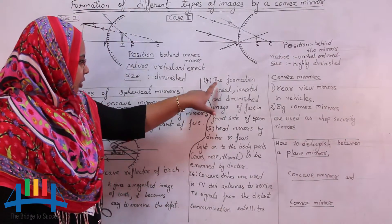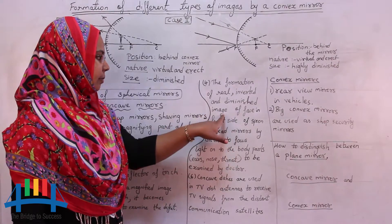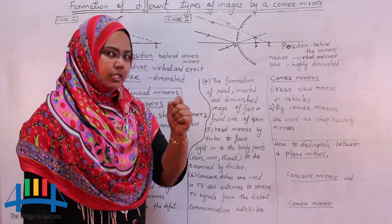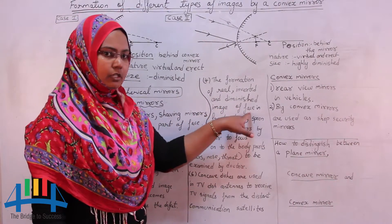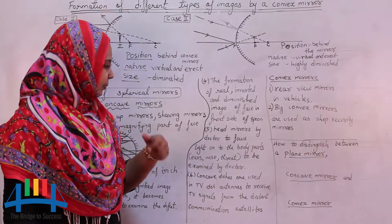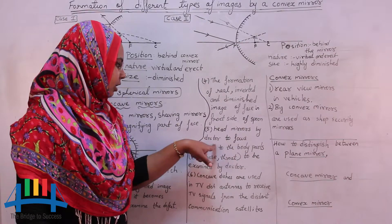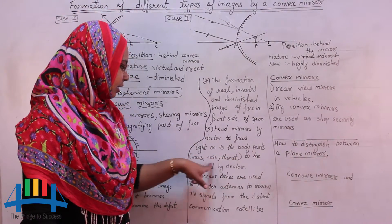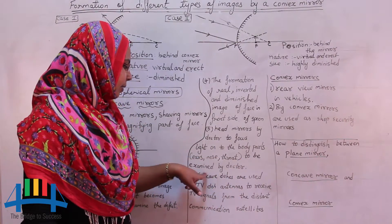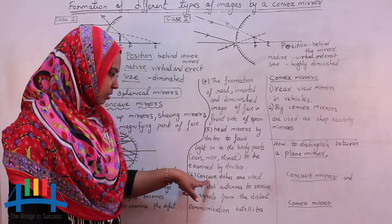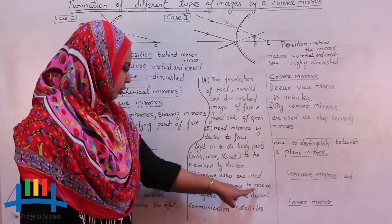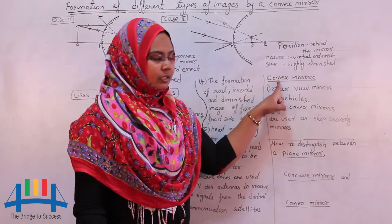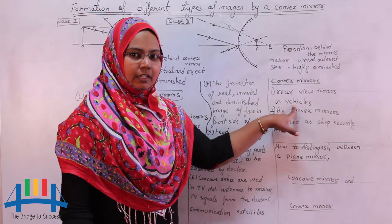Fourth, a concave mirror forms a real, inverted, and diminished image of your face on the front side of a spoon — if you look at the front side of a spoon, you see a diminished image, because that surface behaves as a concave surface. Fifth, concave mirrors are used as head mirrors by doctors to focus light on body parts like ears, nose, and throat for examination. Sixth, concave mirrors are also used in TV dish antennas to receive TV signals from distant communication satellites.